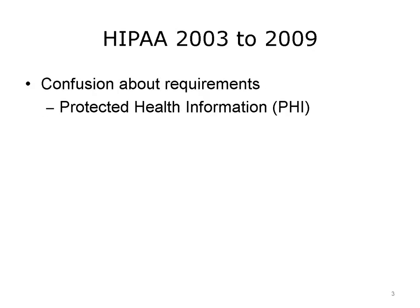HIPAA introduced the concept of Protected Health Information, or PHI. This is health information that also includes identifiers that would allow someone to identify the person to whom the information belongs, such as the person's name, social security number, photograph, etc. When the HIPAA Privacy Rule first became mandatory, there was confusion on how strict it really was intended to be and its requirements to keep PHI confidential.